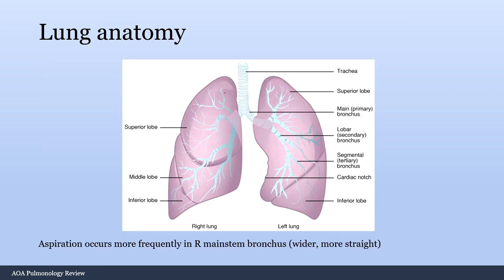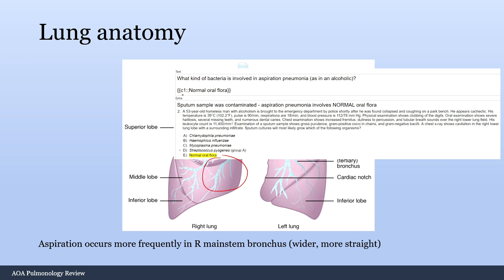Quickly on lung anatomy: the right lung has three lobes and the left has two. The right mainstem bronchus is wider and straighter than the left, making it much easier for aspirates or foreign bodies to travel down it, causing pneumonia or obstruction in the right lower lung. They'll test this by showing a chest X-ray with right lower lung pneumonia in a patient who is an alcoholic or has altered mental status — pointing to aspiration pneumonia from normal oropharyngeal flora.